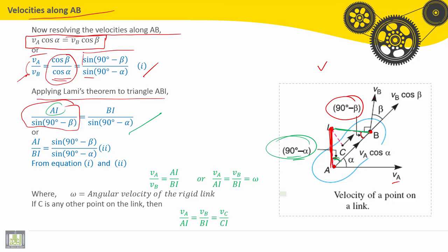Then AI divided by BI is equal to sine of 90 minus beta divided by sine of 90 minus alpha.